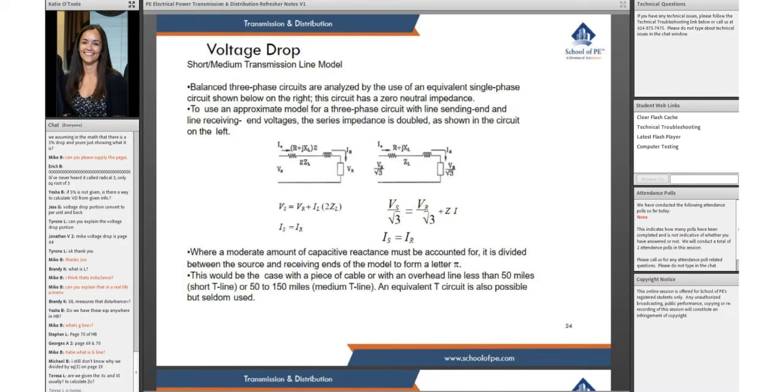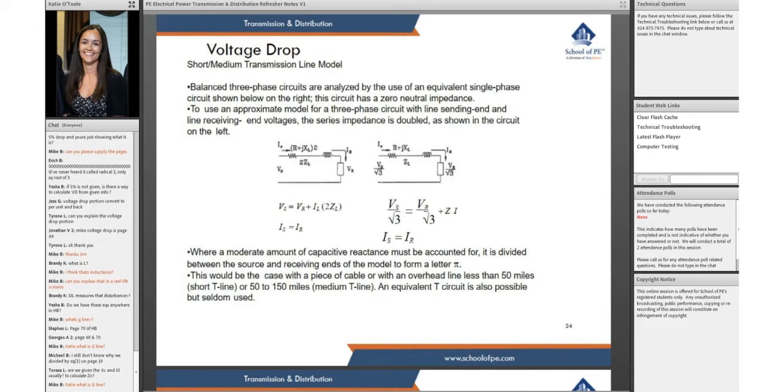Here we have our short/medium transmission line models. Balanced three-phase circuits are analyzed by the use of equivalent single-phase circuits, shown below on the right. This circuit has zero neutral impedance to use an approximate model for a three-phase circuit.